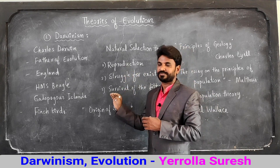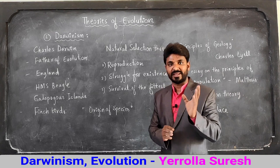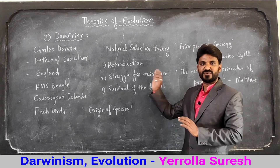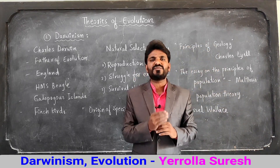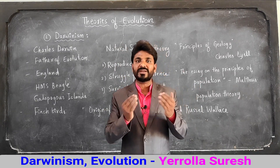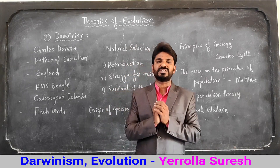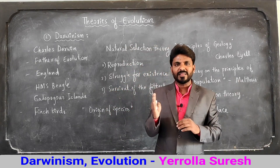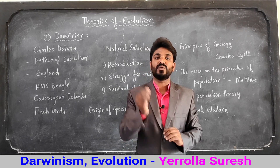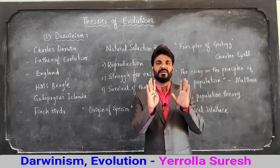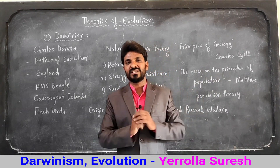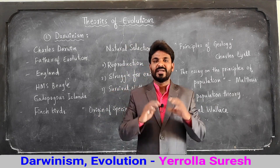Natural selection theory can be understood clearly through three terms: reproduction, struggle for existence, and survival of the fittest. First — reproduction. Reproduction is the characteristic feature of every organism. The primary goal of every organism is to survive and to continue its species. So all organisms in the surroundings produce new babies through the process of reproduction in order to continue their species.